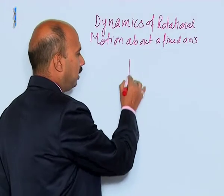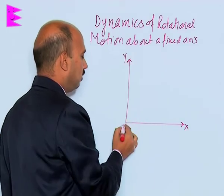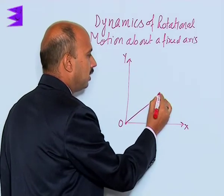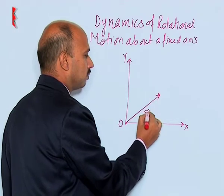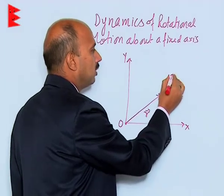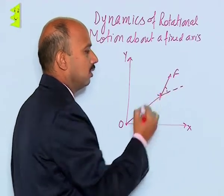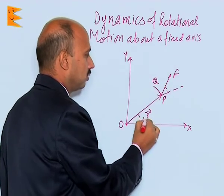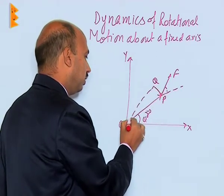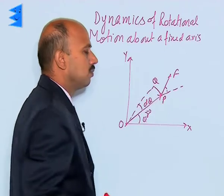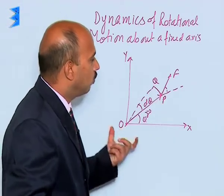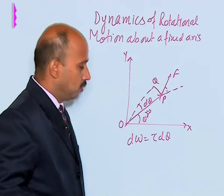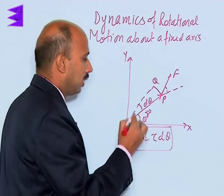Suppose you have taken the x-y plane like this — this is x and y, and this is the point O. A particle is lying here, whose position vector with respect to the origin is r. When you apply a force at this angle — suppose theta — and this particle goes from P to Q, this angle is theta. Then the displacement is d theta, and in this case the work done is given by dW is equal to torque into d theta. By this formula we can calculate the work done by the torque.